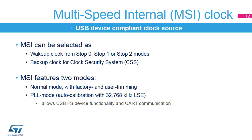The MSI has two modes: normal mode and PLL mode. PLL mode offers an automatic calibration feature with the low-speed external oscillator at 32.768 kHz. The accuracy of PLL mode allows the MSI to be used as a USB full-speed clock in device mode and as a UART peripherals clock. The MSI in normal mode is trimmed during production testing and can also be user-trimmed.